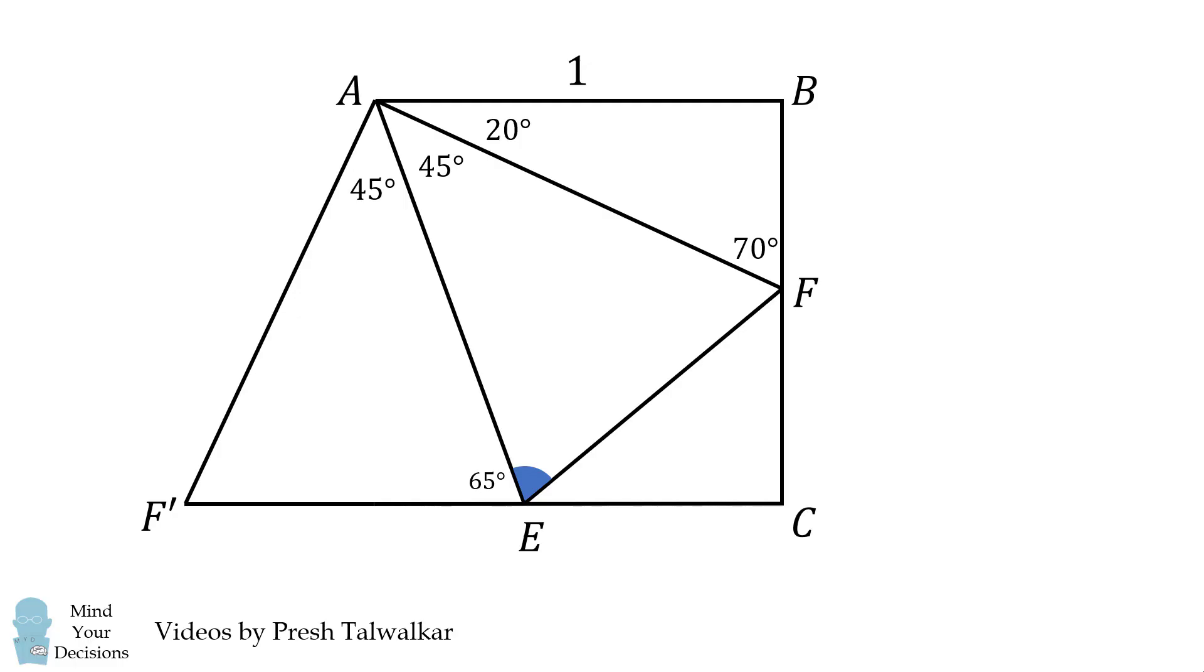Now we are going to consider that AF' is equal to AF by construction. We thus have two triangles that are congruent by side-angle-side. Here we have one side that's equal to itself, then we have two angles that are equal to 45 degrees, and then we have two sides that are equal to each other. Therefore these two triangles are congruent. In fact, they are mirror images of each other. This means angle AEF is exactly equal to angle AEF', and so it is equal to 65 degrees. And we're done with the first part of the question.